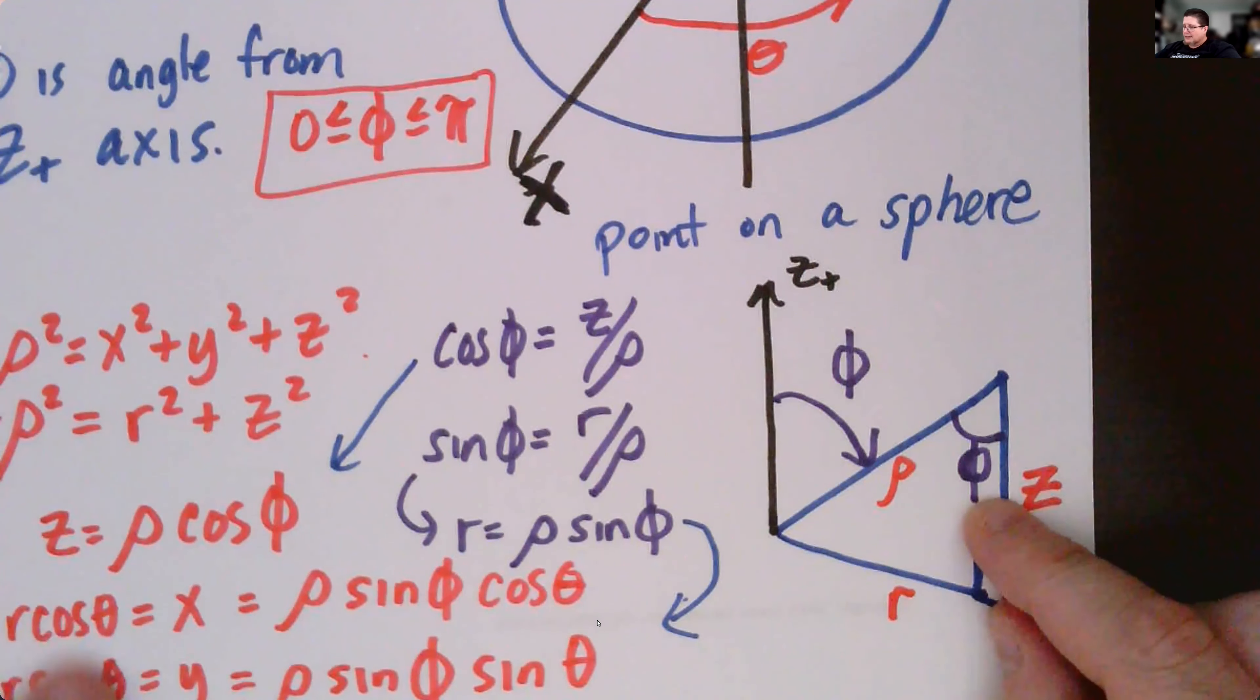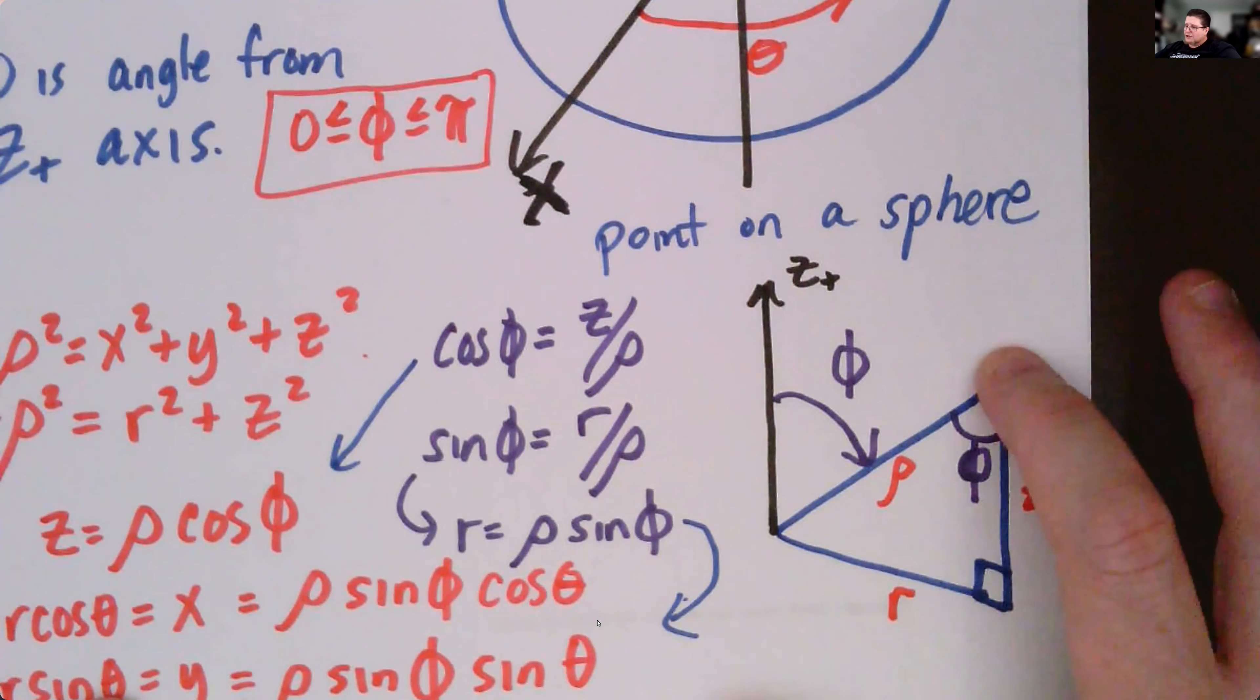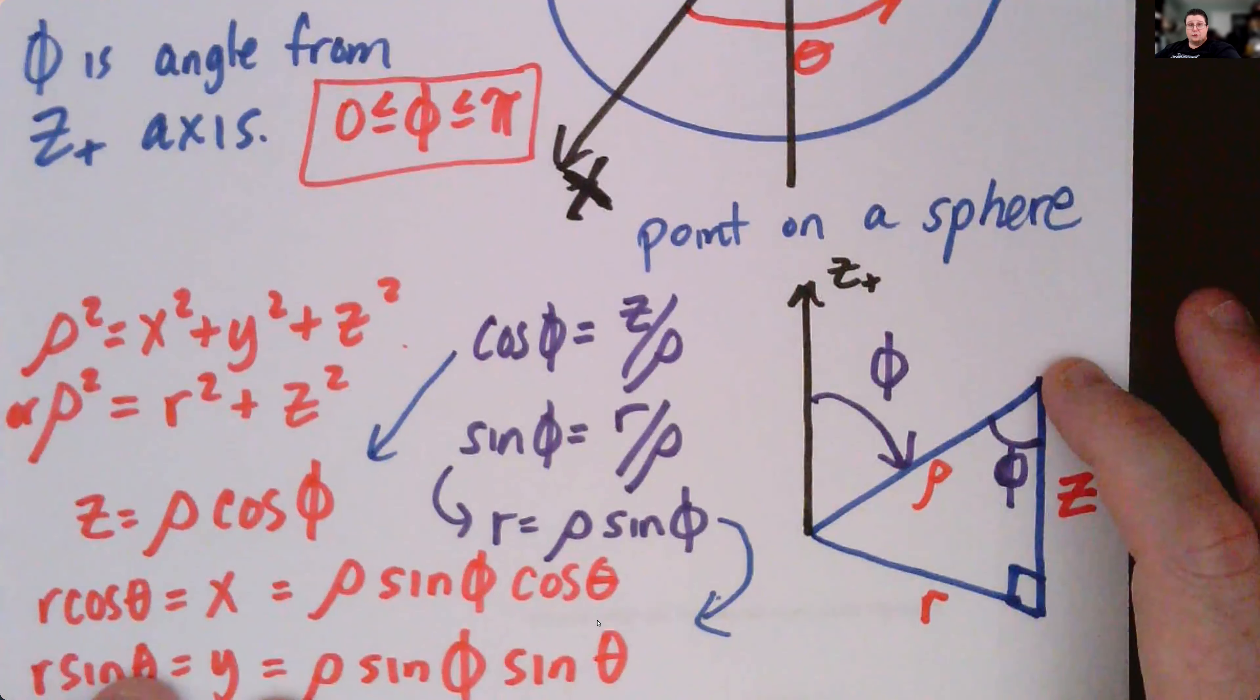And with a little bit of geometry, the alternate interior angles, this is also phi, and it allows us to help calculate some of the stuff. We know any point on the surface of the sphere has got to be x squared plus y squared plus z squared equals the radius squared.